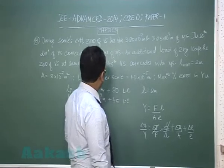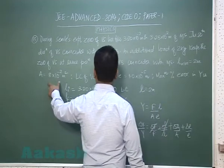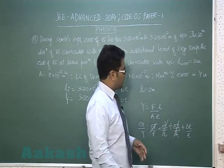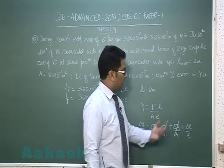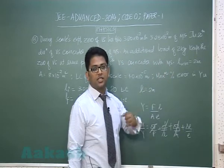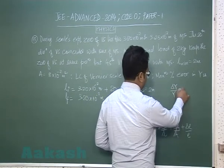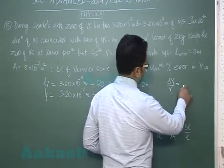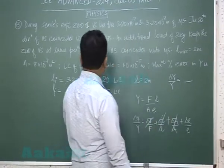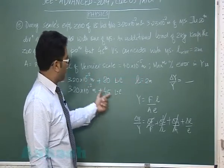The original length is 2 meters, assumed error-free. Cross-sectional area is 8 × 10^-7 meter square, so we assume error in area is 0. When you apply additional load, the elongation changes. The whole percentage change in Young's modulus would be guided by the elongation.